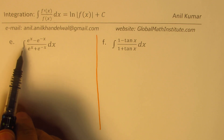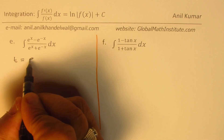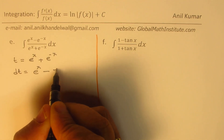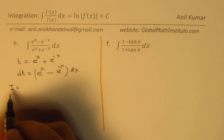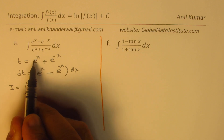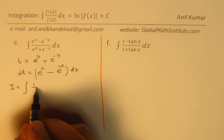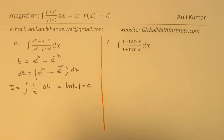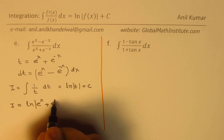For example (e), we have the integral of (eˣ - e⁻ˣ) / (eˣ + e⁻ˣ) dx. We substitute t = eˣ + e⁻ˣ; its derivative is eˣ - e⁻ˣ dx, which is the numerator. Therefore, the integral becomes ∫(1/t) dt = ln|t| + c. Substituting back, the integral equals ln|eˣ + e⁻ˣ| + c.